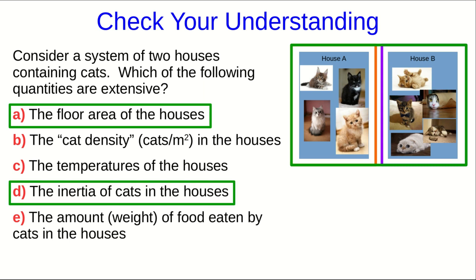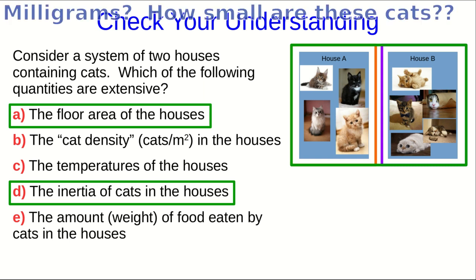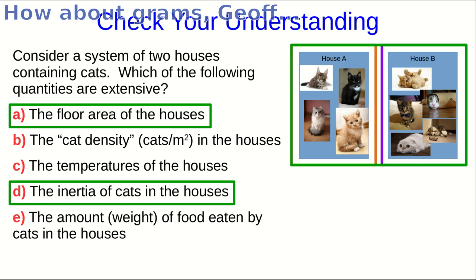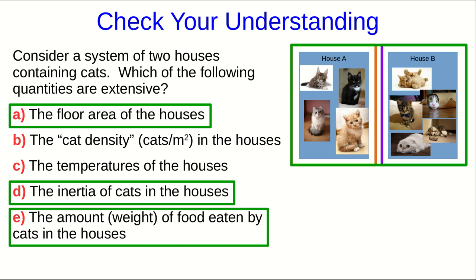And if the cats in one house eat 500 milligrams of food in a day and the cats in the other eat 600, then I think it's clear that the total for the system would be the sum of those, 1.1 kilograms. That's extensive as well.